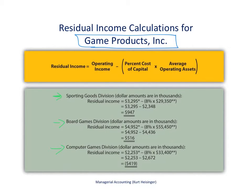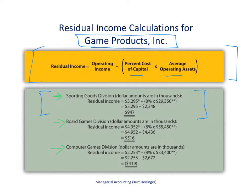The residual income formula is: operating income minus the percent cost of capital times the average operating assets. We're going to assume that the percent cost of capital for all three divisions is 8%. The operating income numbers are shown here. We'll focus on the sporting goods division; the other divisions can be reviewed separately.